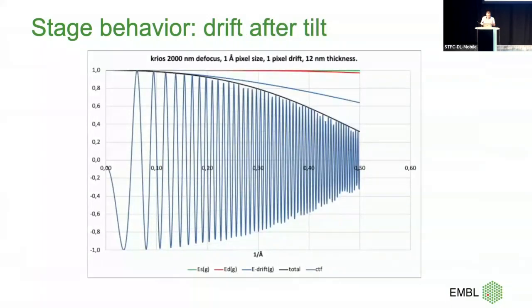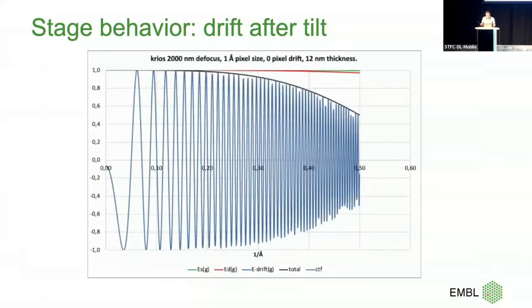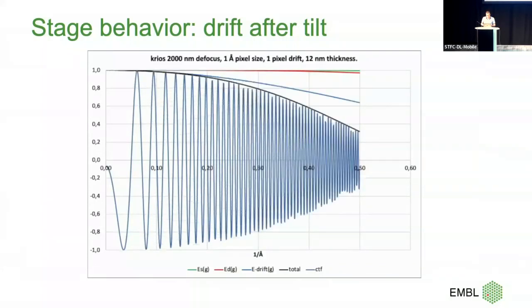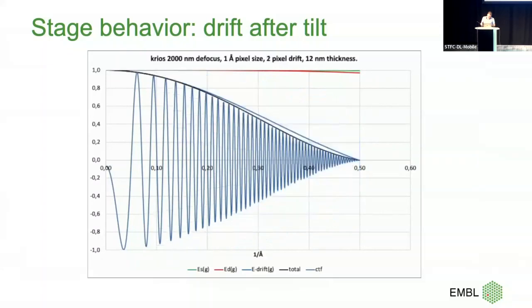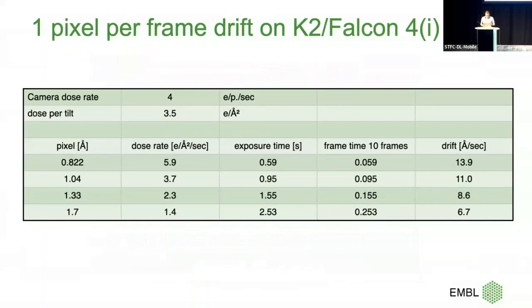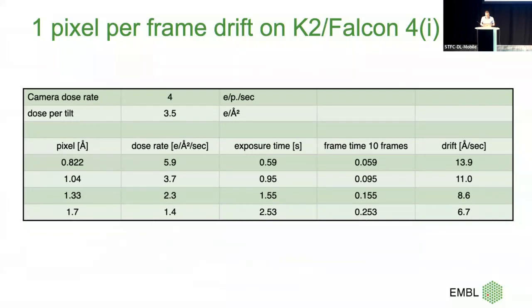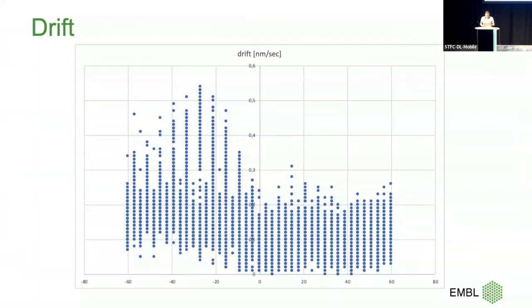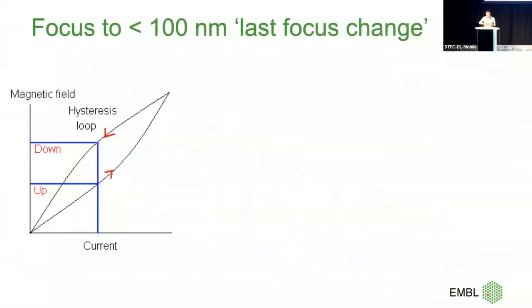I was also measuring drift because there's a dampening curve from drift. Here you can see zero, one, two, three pixels of drift and the effect on the dampening curve. On older scopes this mattered — the advice was 10 frames per tilt image. For a K2, and I guess Falcon 4 is similar, you end up with the drift spec shown on the left. On an old Krios with K2 I would still measure drift; on a K3 everything is so fast it doesn't really matter anymore.